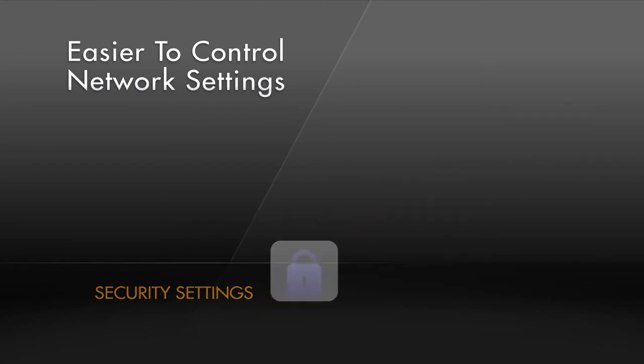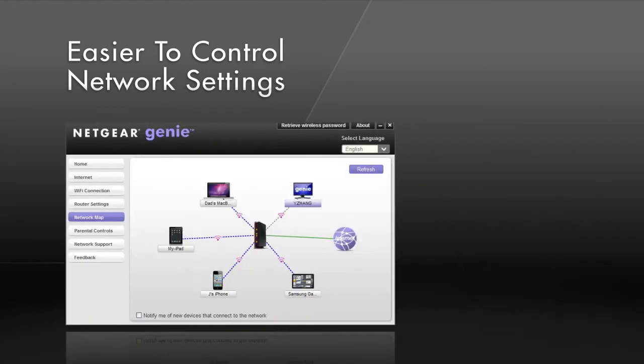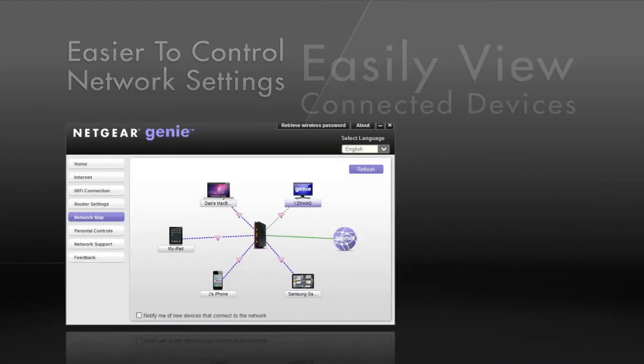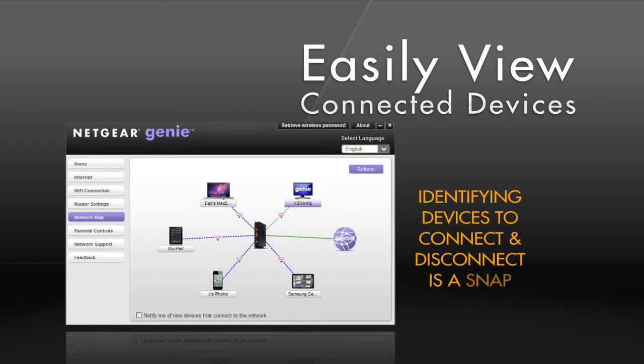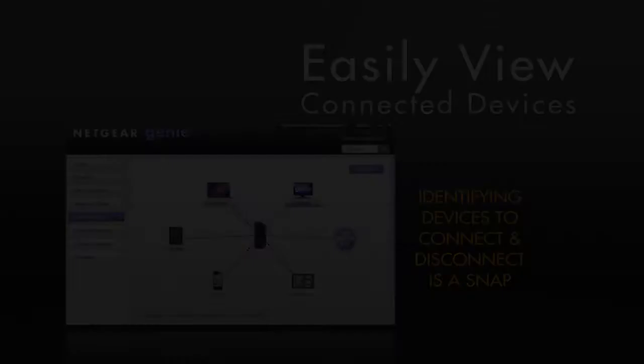You can even view a map of all the devices that are connected to your home network to make sure everything is online that you want and eliminate ones you don't.